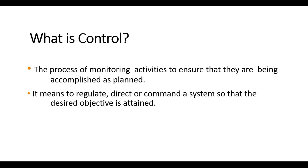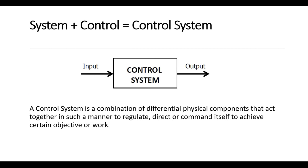When you combine the definition of system and control, you get the definition of a control system. A control system is a combination of different physical components that act together to regulate, direct, or command itself to achieve a certain objective or work. It is a system where physical components interact with each other in such a way that we have control and can regulate it to get a certain objective.